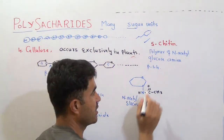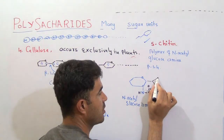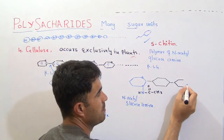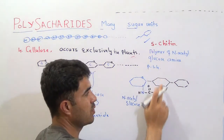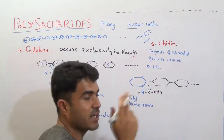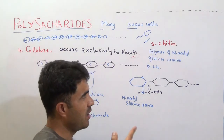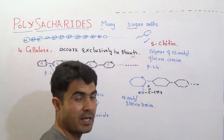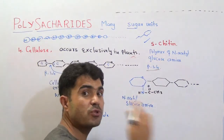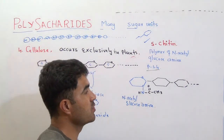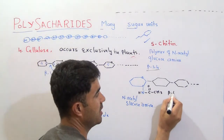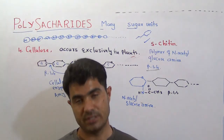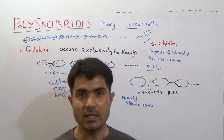If we combine many such N-acetylglucosamine units — N-acetylglucosamine, N-acetylglucosamine, and so on — this kind of polysaccharide is called chitin. We can call it a homopolysaccharide because every unit is similar. Chitin contains beta 1,4 linkage — this is very important for MCQs. The beta 1,4 is the linkage between individual N-acetylglucosamine units. Remember, chitin is present in the cell wall of fungi.